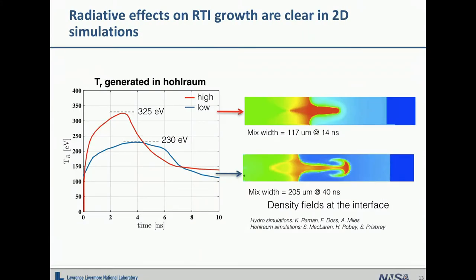We have done this experiment on NIF with two different radiation temperature environments: 325 eV versus 200 eV. Simulations show that at high drive, the Rayleigh-Taylor growth is very much suppressed compared to the cold drive case. In the low drive experiment, you can see the shock front moving as a function of time, and the ripper growth clearly increasing. In the high drive case, at the same interface position, even by eye the growth amount is already quite suppressed — it doesn't grow with the mushroom-cap features and is much smaller.